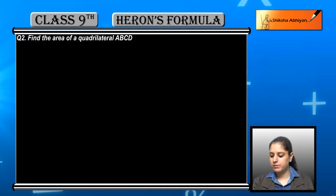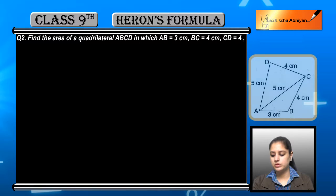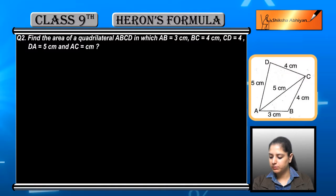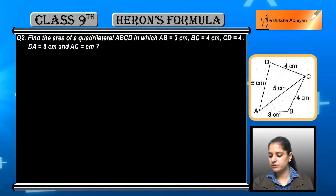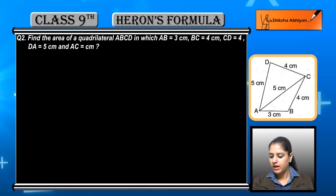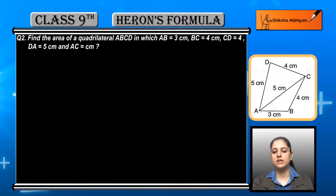Question number two: find the area of a quadrilateral ABCD in which AB is equal to 3 cm, BC is equal to 4 cm, CD is equal to 4 cm, DA is equal to 5 cm, and AC is equal to 5 cm. ABCD quadrilateral is given and these are the measurements. Let us see how to find the area of this quadrilateral.